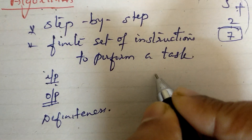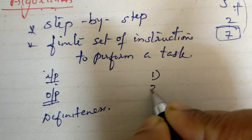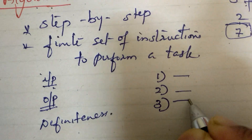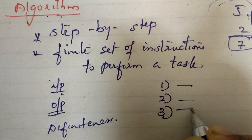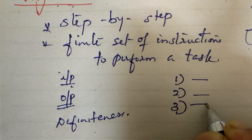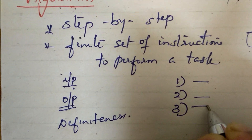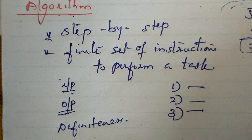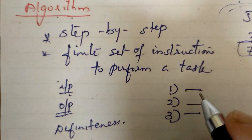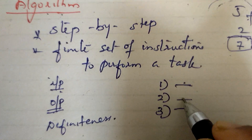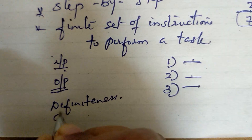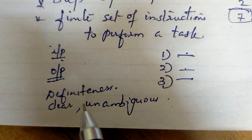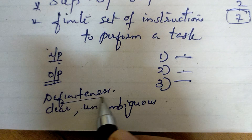The next property is definiteness. Each step of the algorithm — first step, second step, third step — must be clear and unambiguous. Unambiguous means there is no confusion or doubt. That is definiteness.